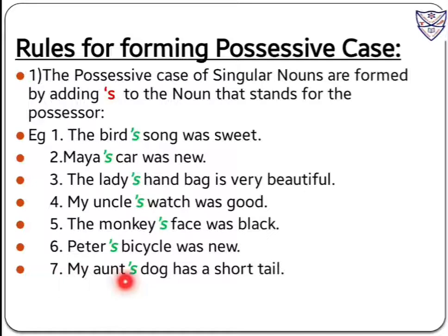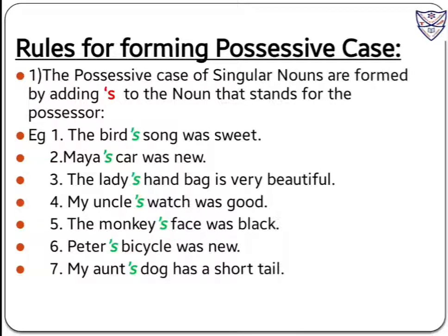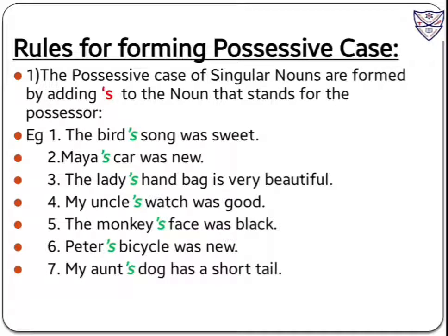Number seven: my aunt's dog has a short tail. After aunt we put apostrophe s to show the belonging of the dog with aunt. It means the dog belongs to aunt. In all these sentences, words such as bird, Maya, lady, uncle, monkey, Peter, and aunt are known as possessors. So in the possessive case of singular nouns, we add apostrophe s to the noun that stands for the possessor.